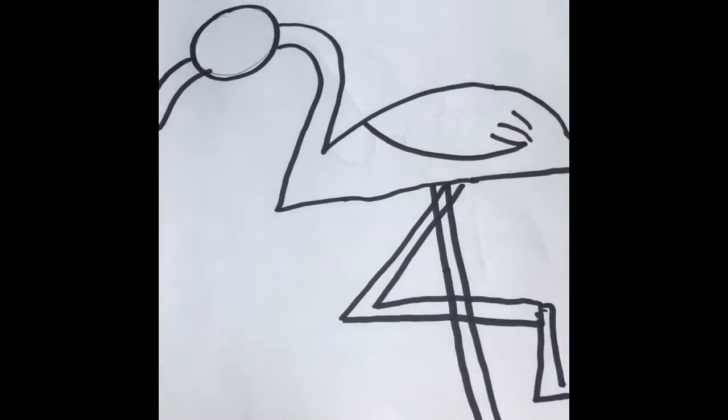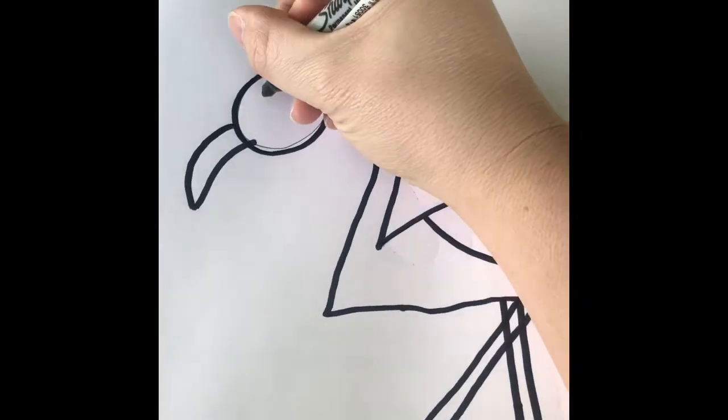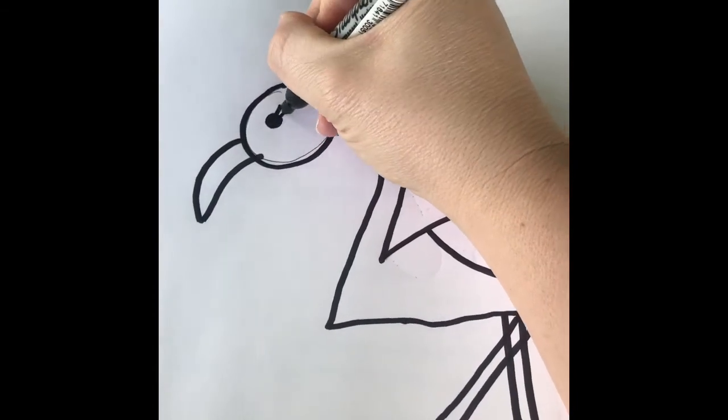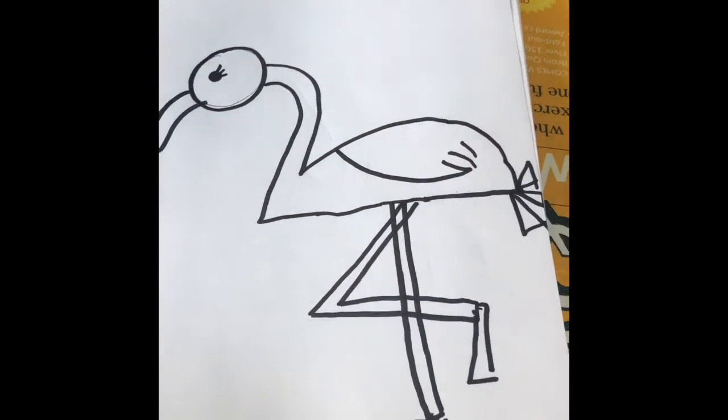Next, we want to give him an eye. So I'm going to do a little... it's out like this. Maybe you want some eyelashes. Why not? There's my little flamingo.